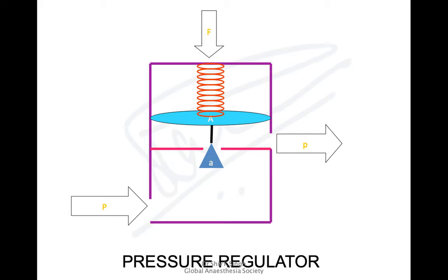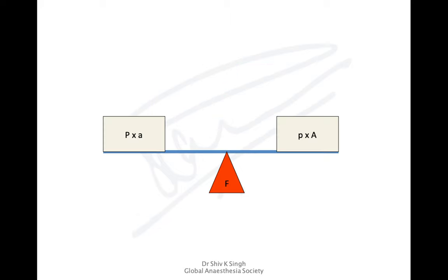This diagram is very important because similar diagrams can be drawn for other equipment. The force of the spring will depend on the type of gas — different for a nitrous oxide cylinder versus oxygen cylinders. These are factory preset: in the factory, the force is set differently for nitrous and differently for oxygen, and similarly for other agents.